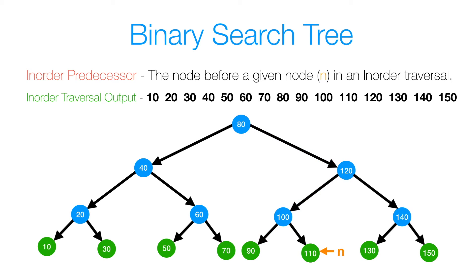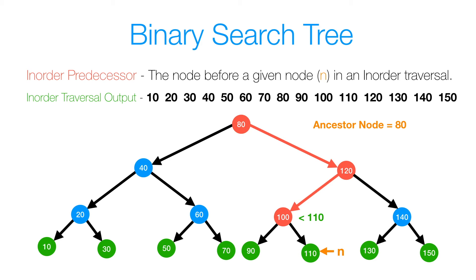Now if n was 110 and we didn't have parent references, we couldn't go up the tree. But given that we have access to the root node, this is very easy. Starting from the root, we do a simple search to find 110, and while we search, we update a reference variable to keep track of nodes with values closest to 110. Starting from root node 80, we update a reference variable called ancestor node. Since 80 is less than 110, we go right and reach 120. Since 120 is more than 110, we go left and reach 100. Since 100 is less than 110, we update ancestor node to 100 and go right. We then reach 110 and return our ancestor node with value 100.